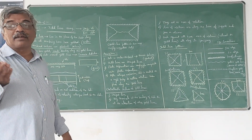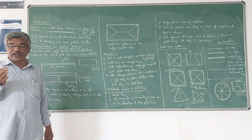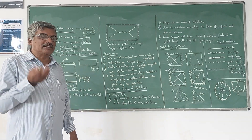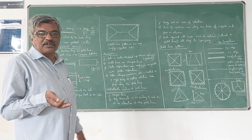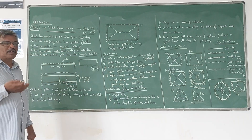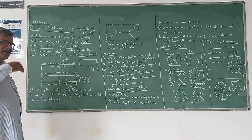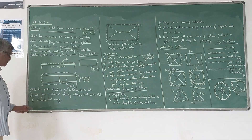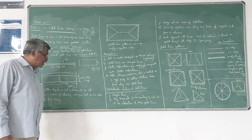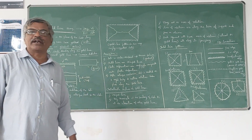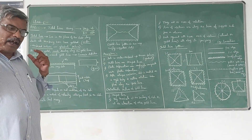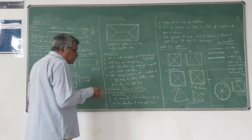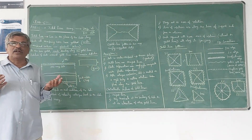Different end conditions have been seen in various codes. A slab has four edges: some edges may be continuous, some fixed, some free, and some simply supported. Depending on the different end conditions of the slab, the yield line pattern also changes. It gives a measure of estimating collapse load for the slab — that is, at what load that particular slab will collapse.